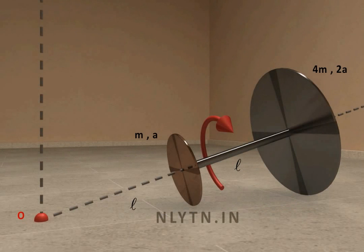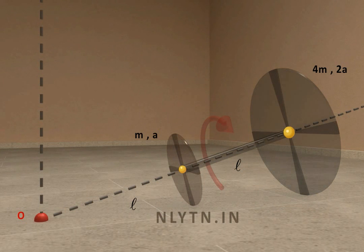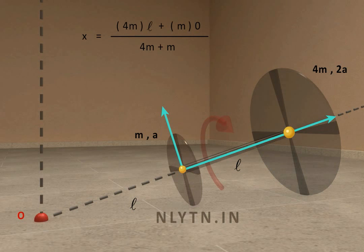Now let us first find the center of mass of the given object. Assuming the mass of both of the disks to be at the center of mass and taking this point as reference, we can say that the center of mass of the entire system will lie at this distance from this reference point.